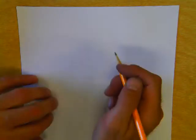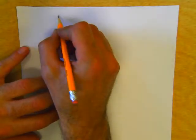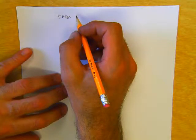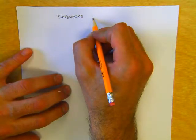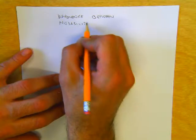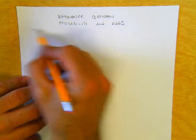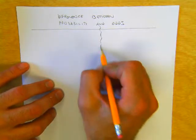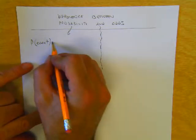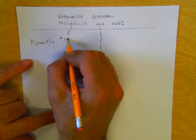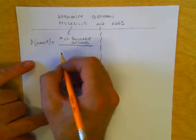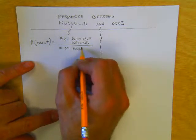You often hear people confusing probability and odds. They might say, what's the probability you're going to win the lottery, or what are the odds I'm going to win the lottery? It turns out that probability and odds are not the same thing — they are related, but they are different. So let's talk about the difference between probability and odds.